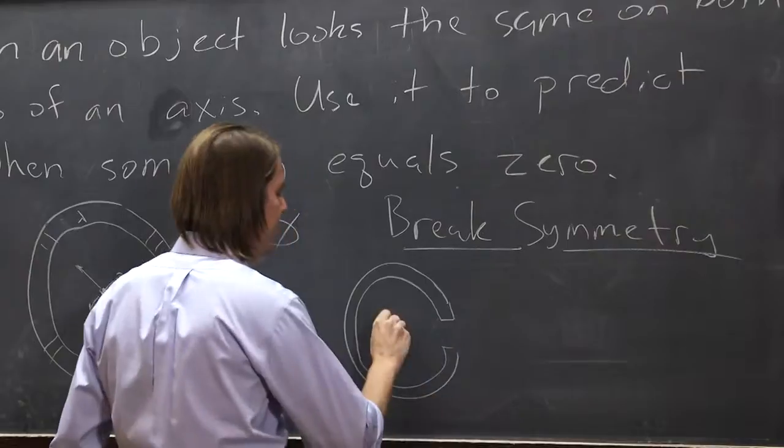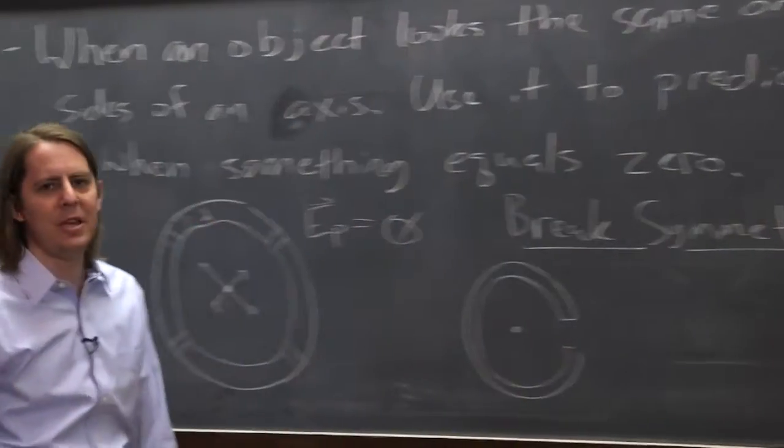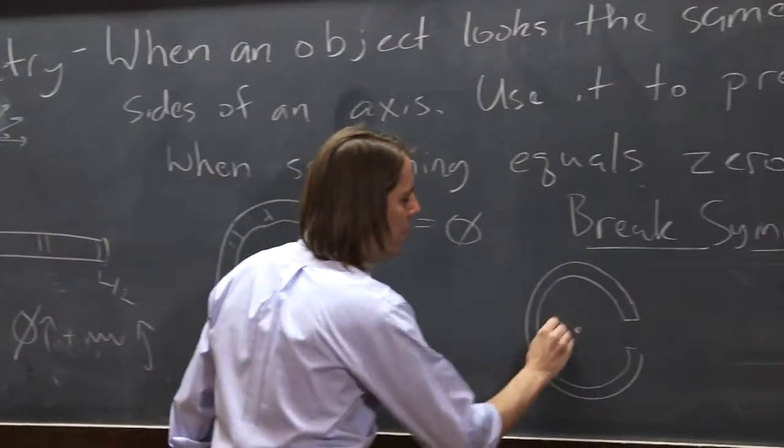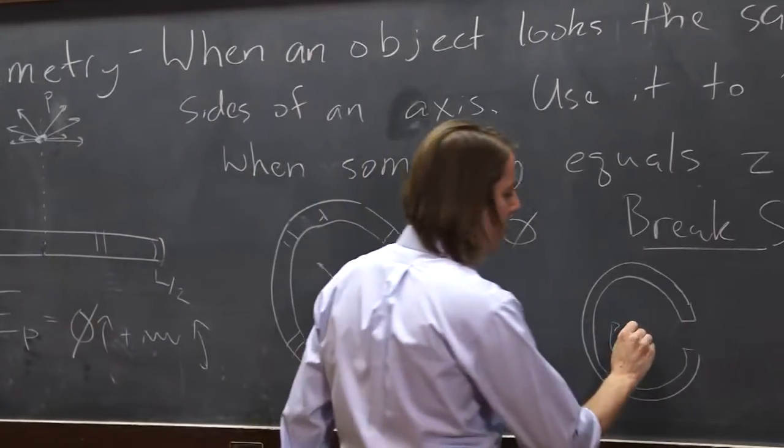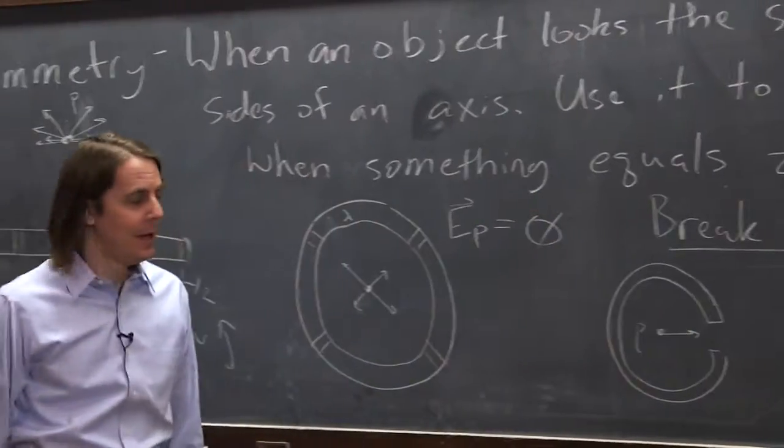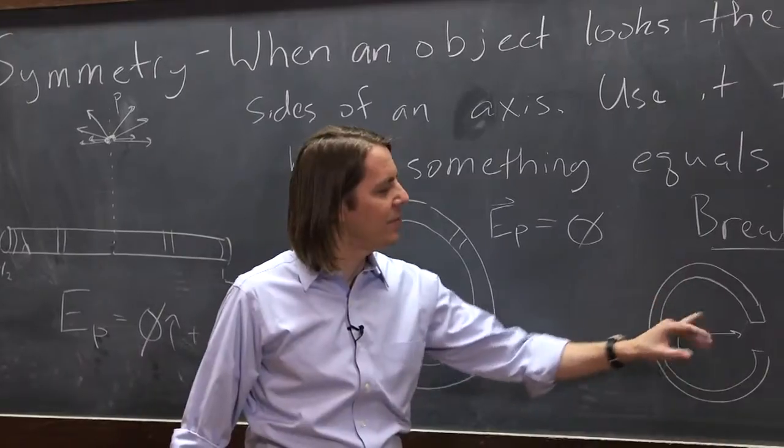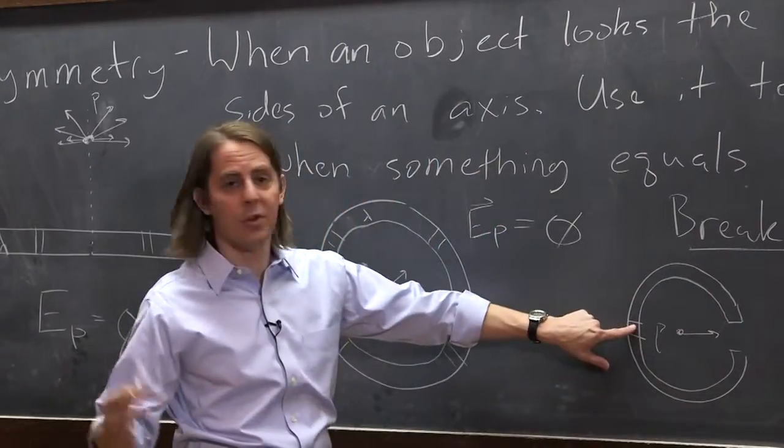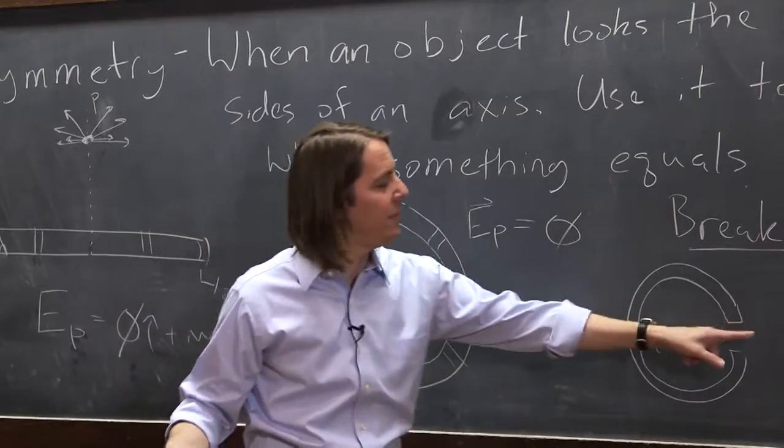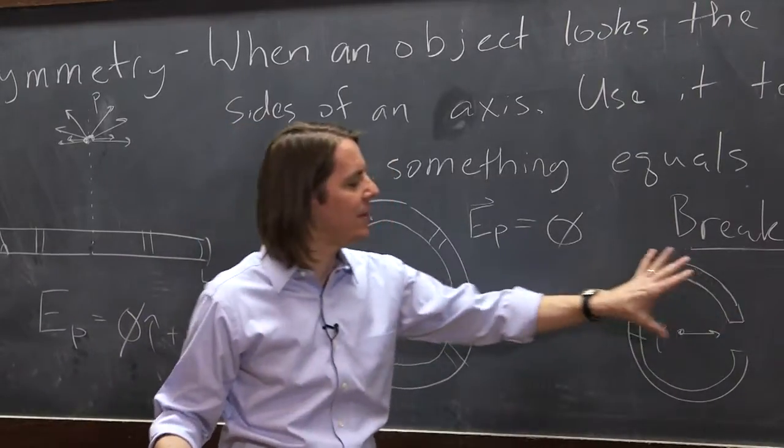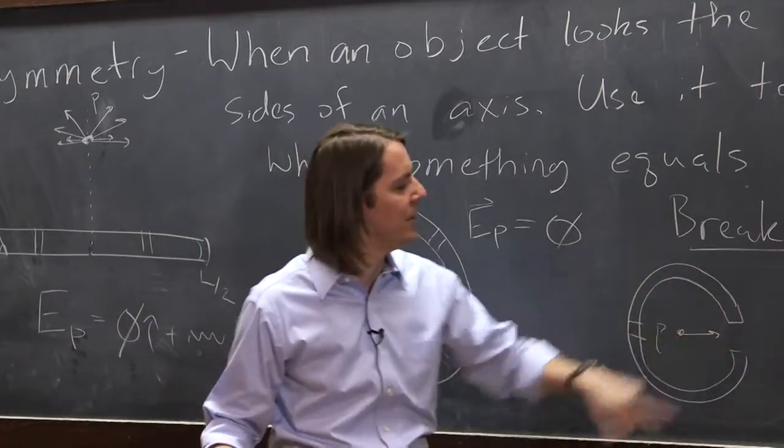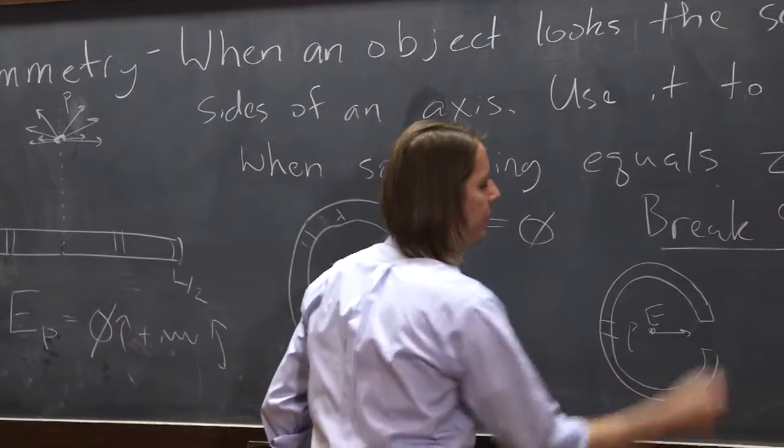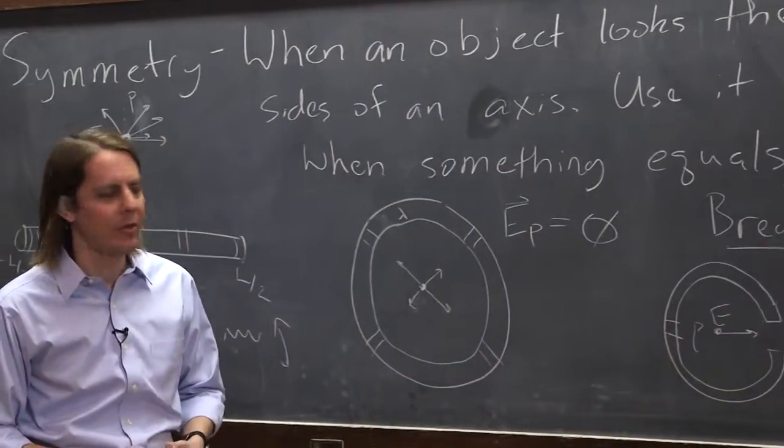So without doing any calculations, you could say which way is the field at point P in the center? You don't have to do any calculations to know that it's this way. Because you can think about all these dXs canceling, the one that doesn't have anything to cancel is right here. So as long as the charge is positive on the ring, the field would have to be that way. All the other components will have their things cancel. But this component here is missing its partner over there. So E is going to be to the right. That's an example of broken symmetry.